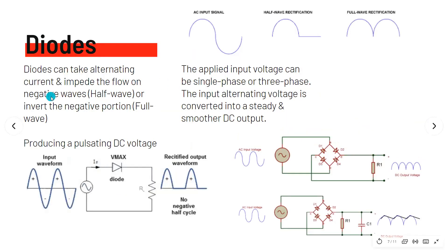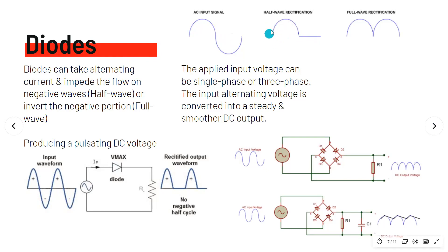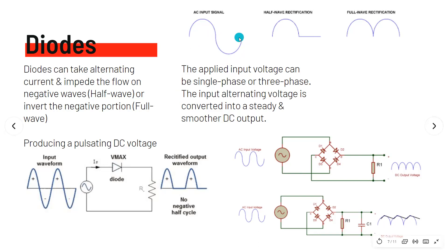Diodes can take alternating current and impede the flow on the negative waves — known as a half-wave rectifier — or invert the negative portion to cause full-wave rectification. With one diode, the diode does not allow current to flow during the negative peak, so it flattens out and you only allow the positive part of the AC to pass through — you lose power during that time. The applied input voltage can be single phase or three phase, and the input alternating voltage is converted into a smoother DC output.